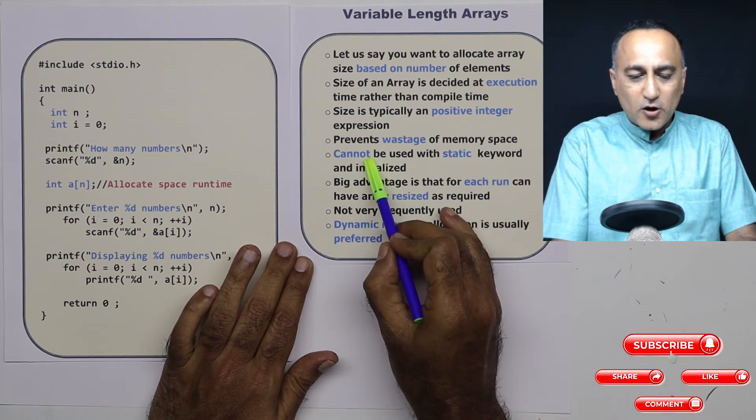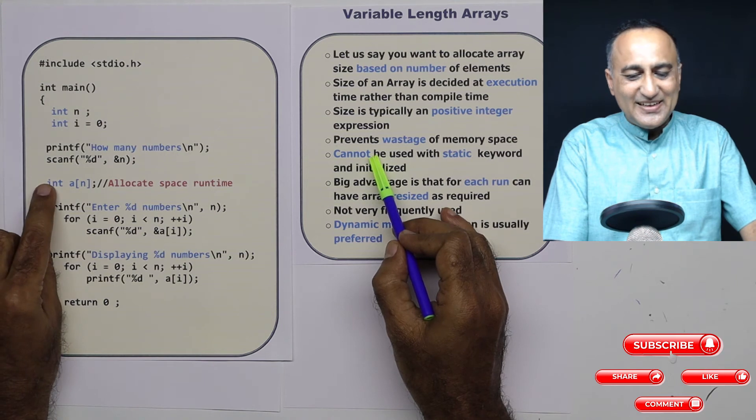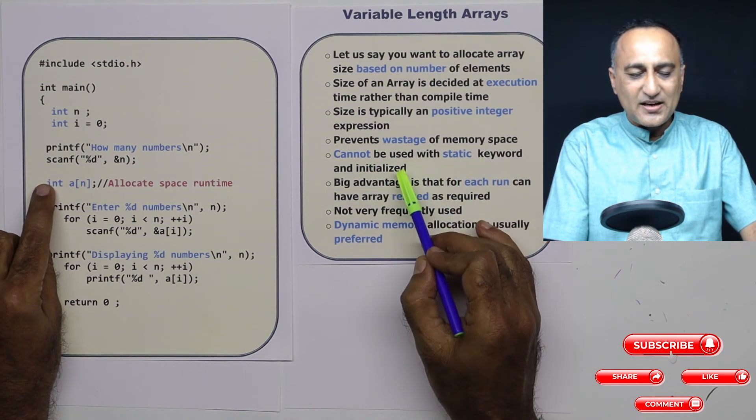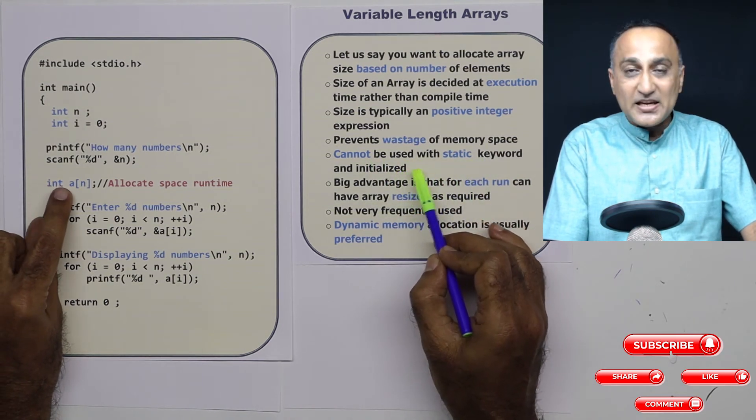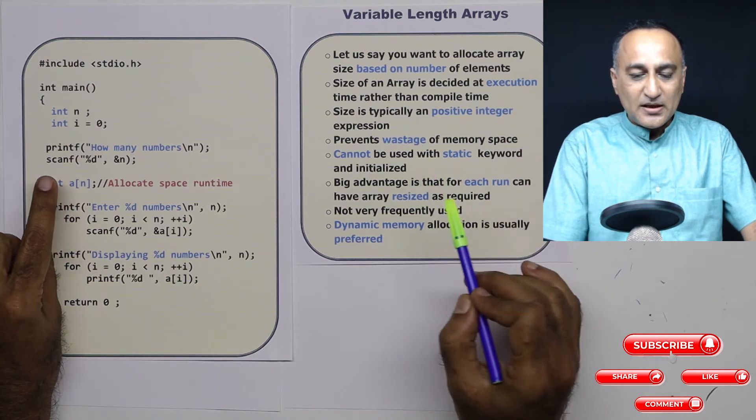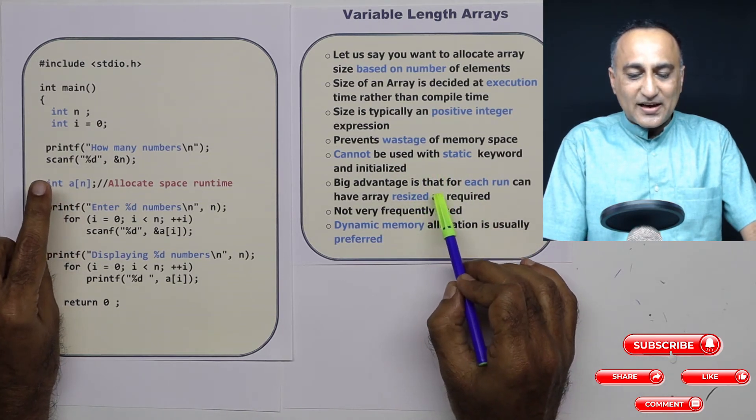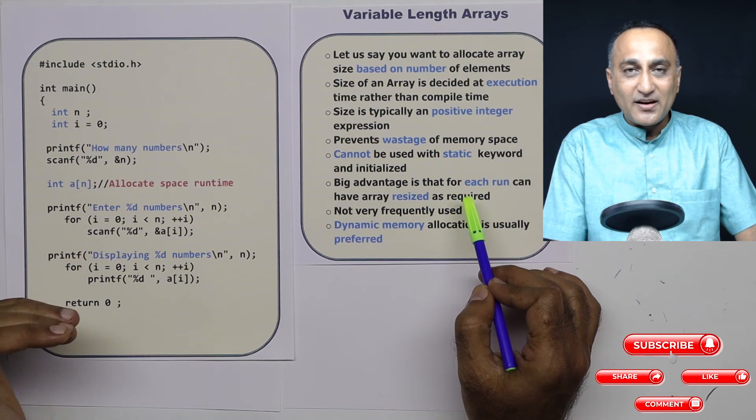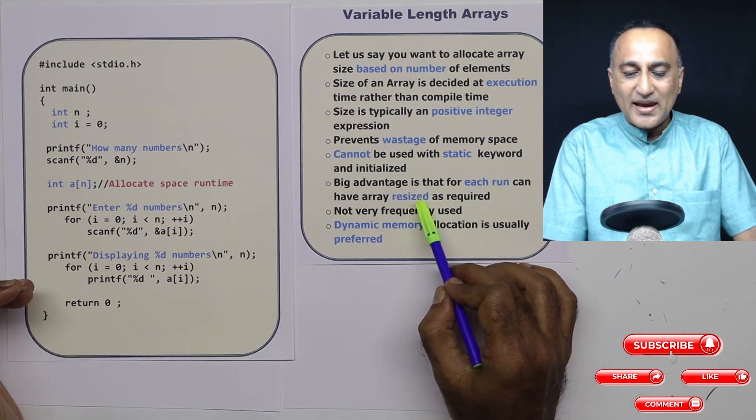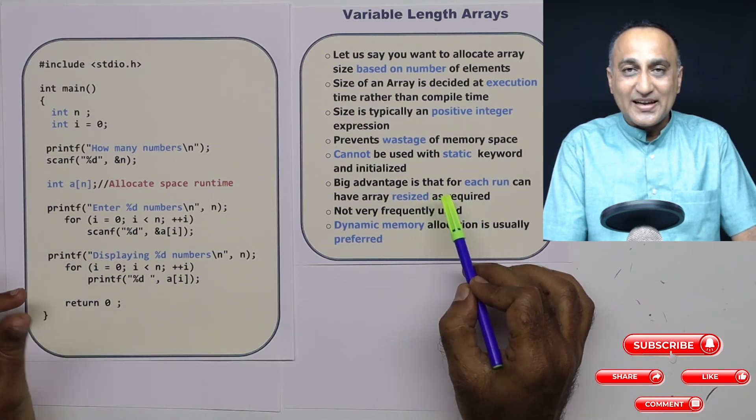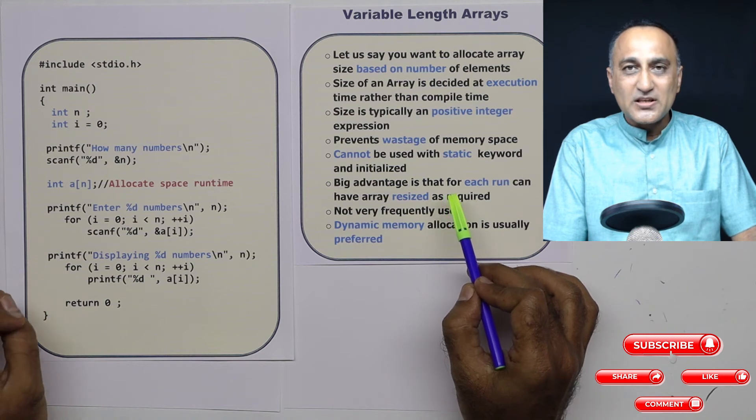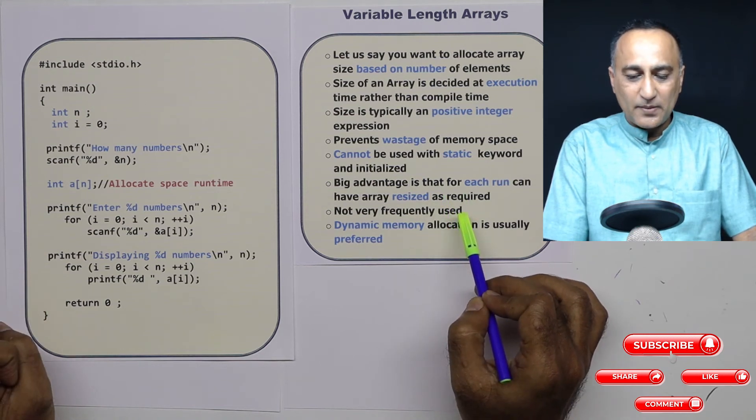You cannot have the keyword static in here, you cannot use the keyword static, and nor can you give it any initial values. The big advantage is that for every run, based on the requirement, you can have the array resized or created to just use enough space as per the requirement.